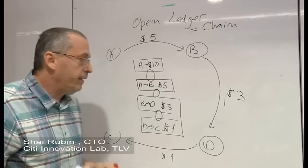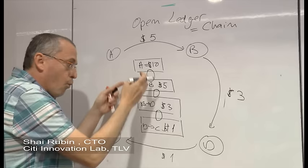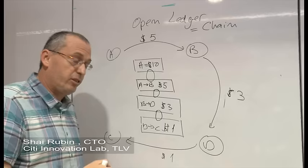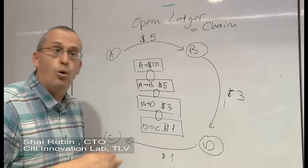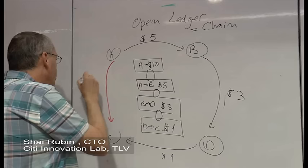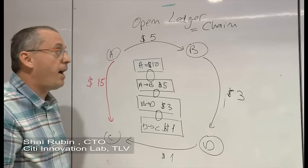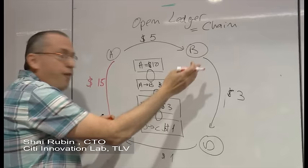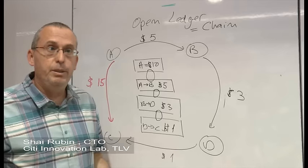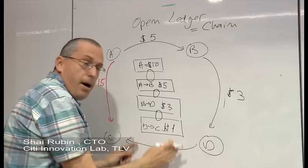What it gives us is that everyone on the network can see where the money is, how much money each one has in its pocket, and second, everyone can decide whether a transaction is valid or not valid. For example, if A now attempts to move $15 to C, everyone on the network can immediately see that this is not a valid transaction. Because A started with 10, moved out to B another 5, A does not have $15, and this transaction will not be added to the open ledger. This transaction will not be part of the chain.